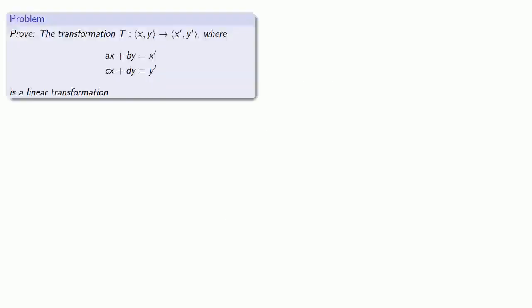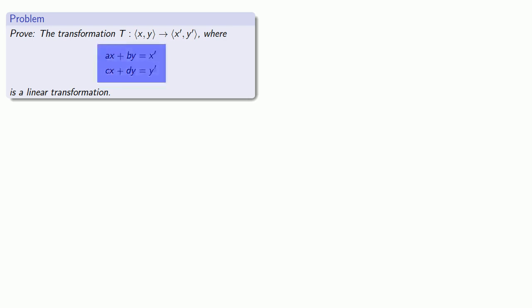So let's take a transformation from x, y to x prime, y prime, where x prime and y prime are defined in terms of nice, simple, linear formulas, which we can describe using a coefficient matrix. Let's prove that this is, in fact, a linear transformation.